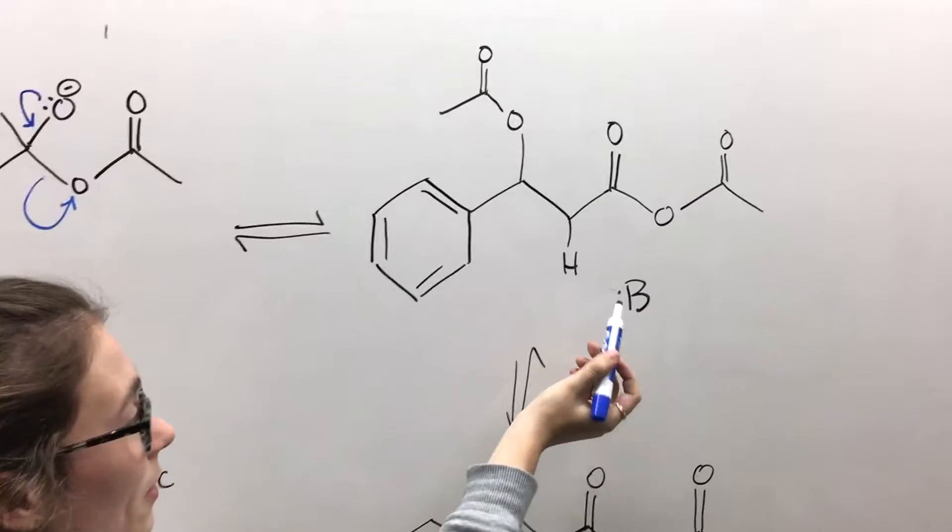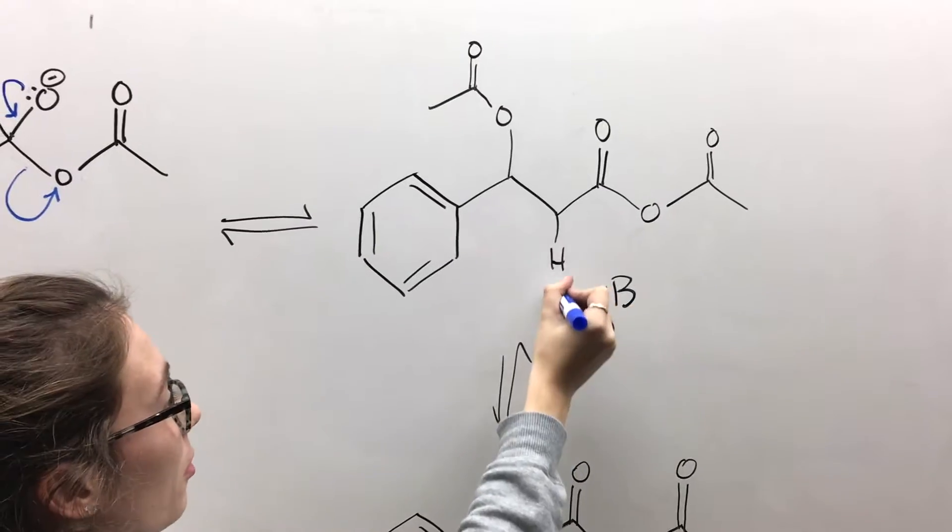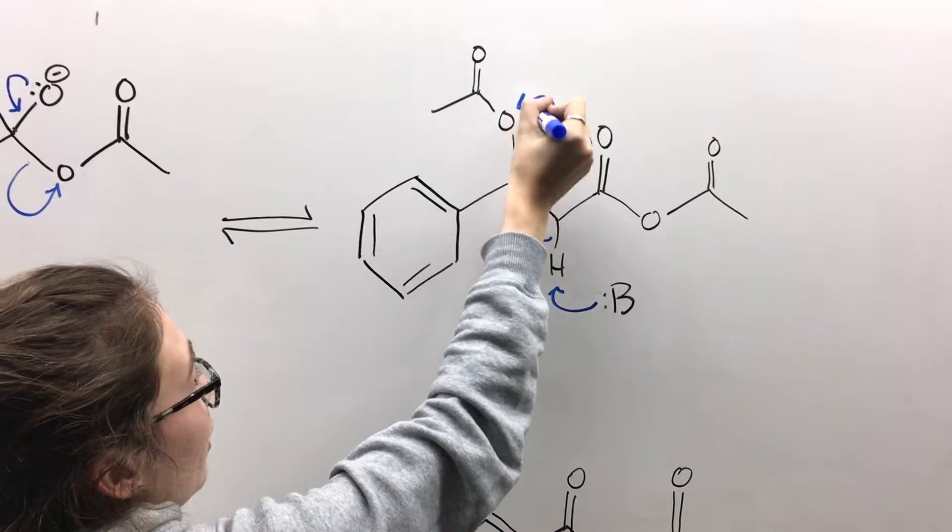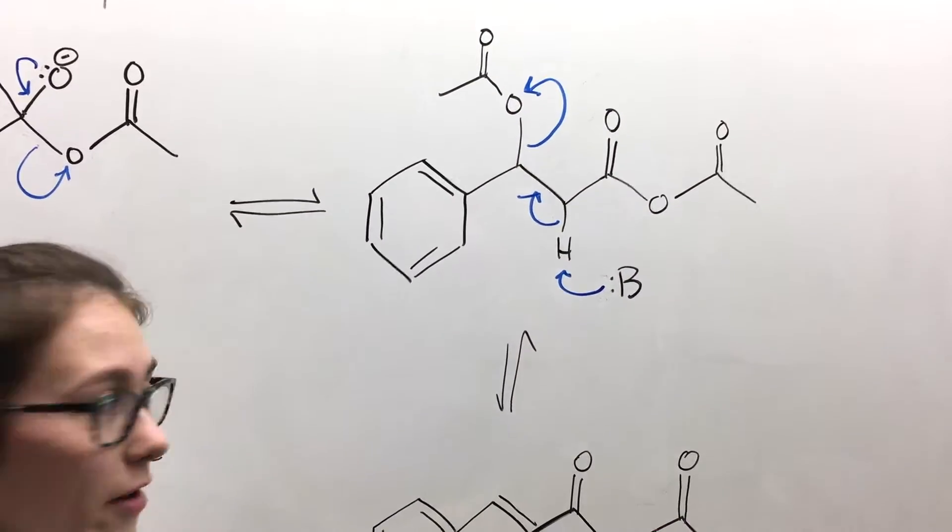Now when you look over here, in the next step, the base is going to deprotonate the hydrogen, pushing the electrons here, and once again, causing an acetate ion to leave.